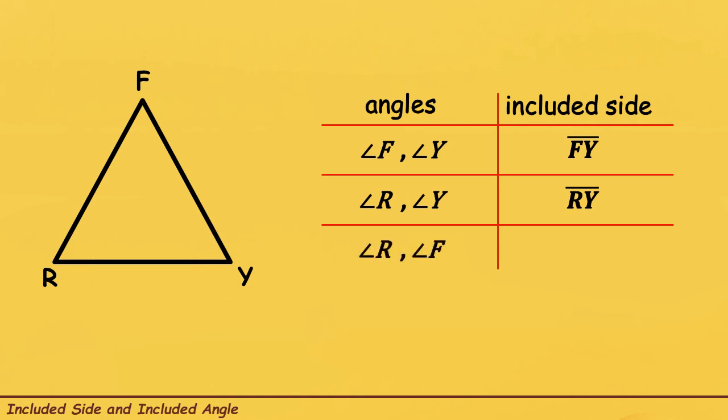Last, let us find the Included Side of Angle R and Angle F. Ito si Angle R and Angle F. Ang Included Side niya is itong side na to. Therefore, the Included Side of Angle R and Angle F is Line Segment RF.